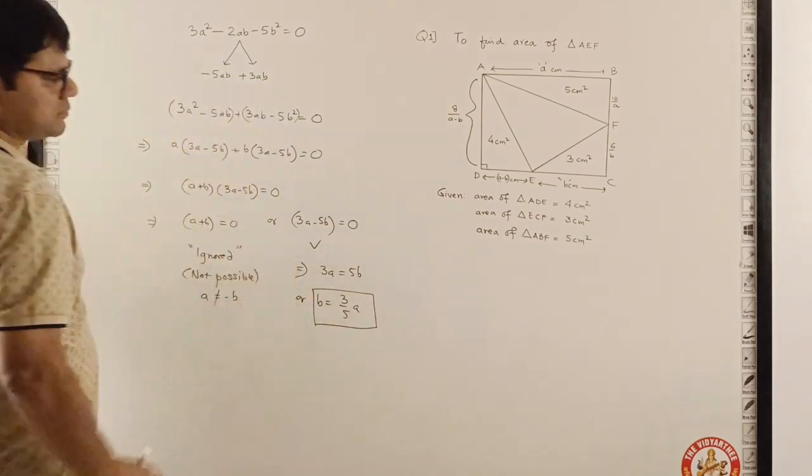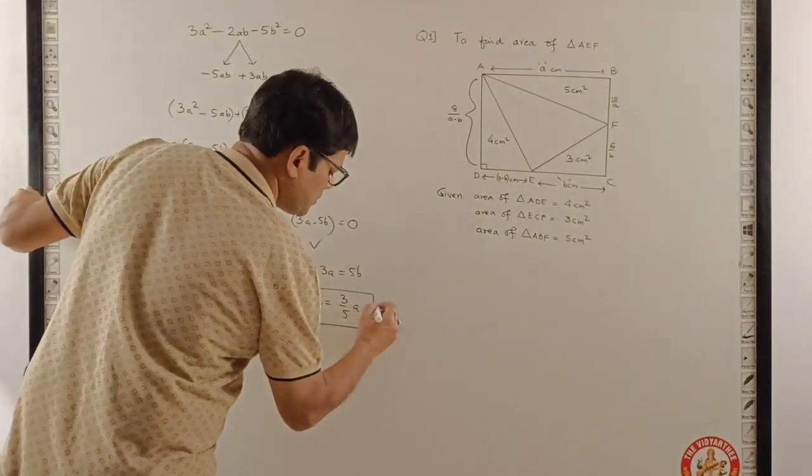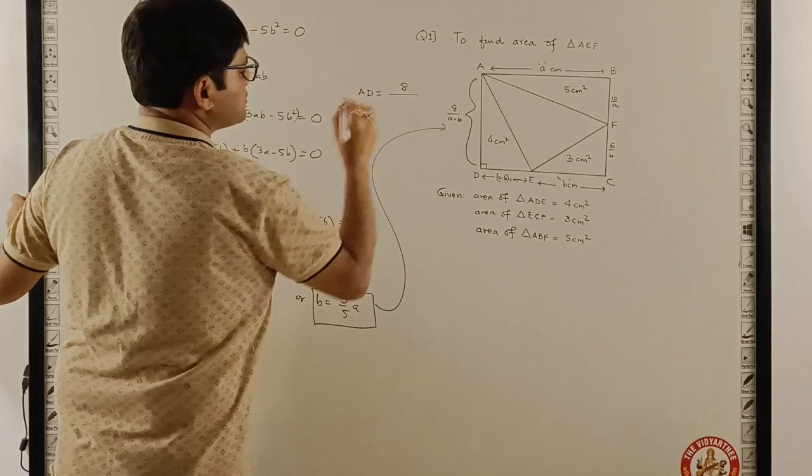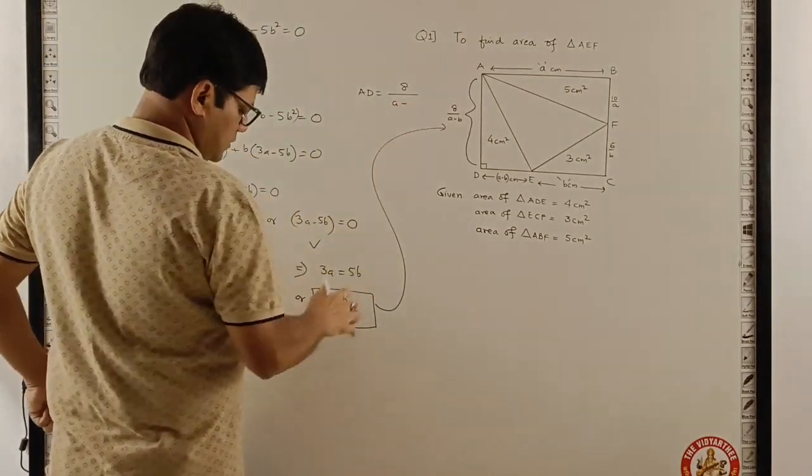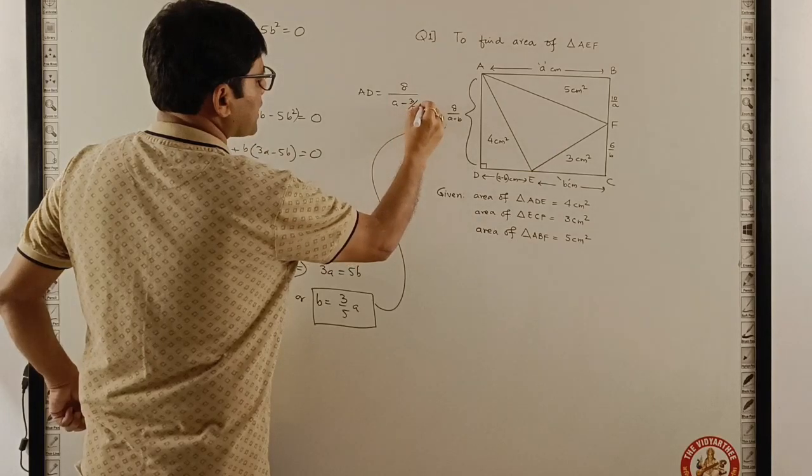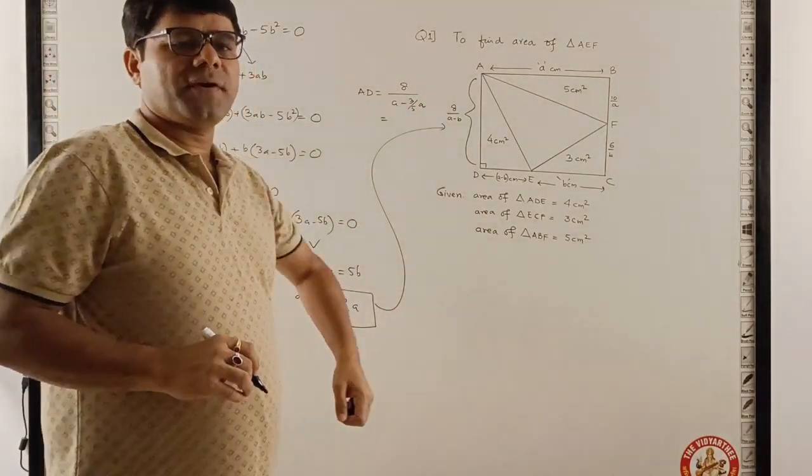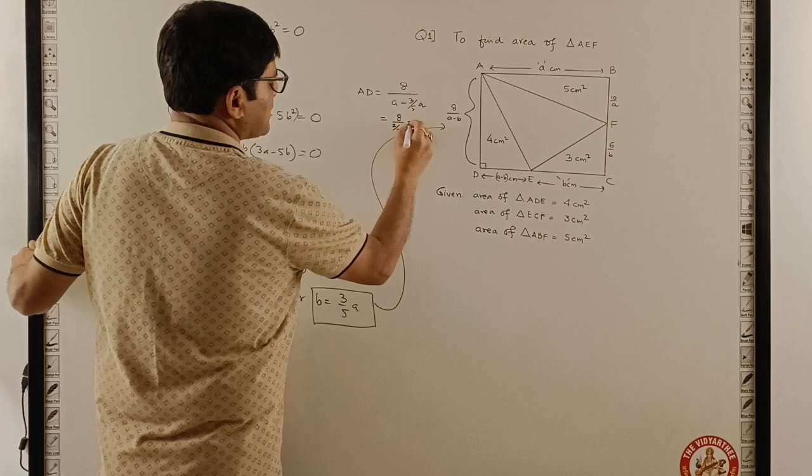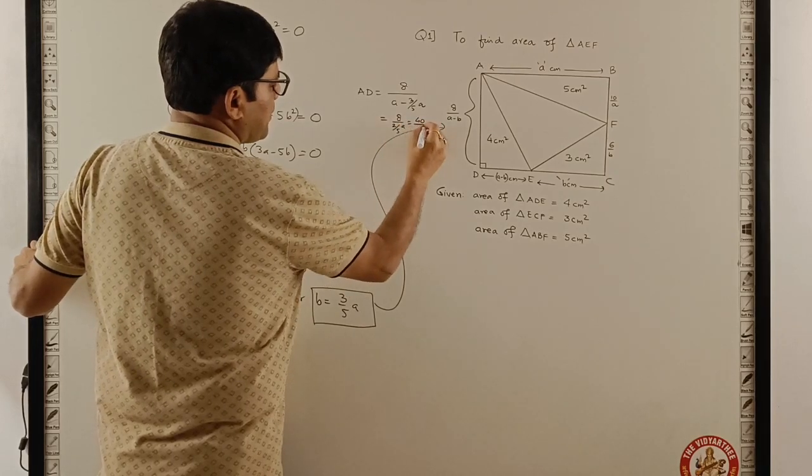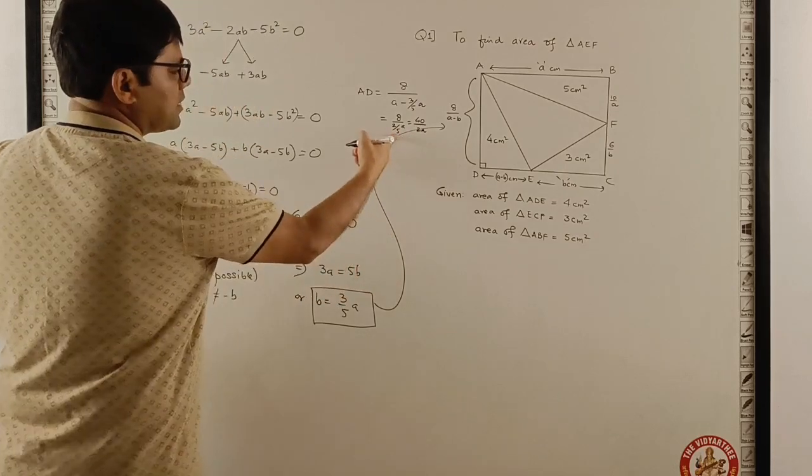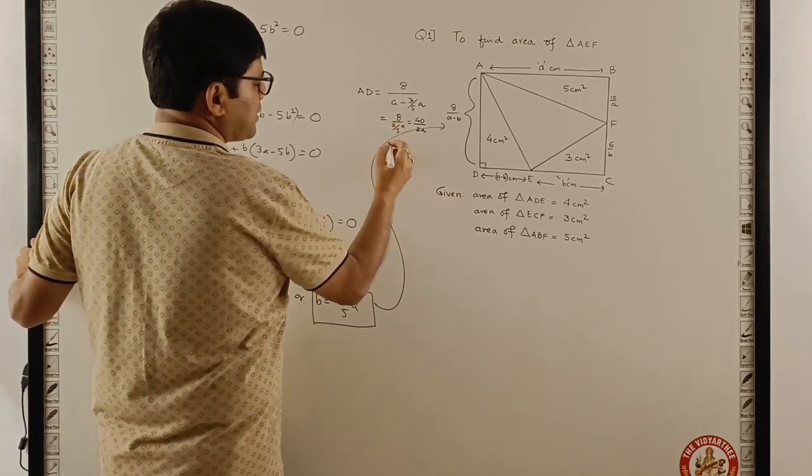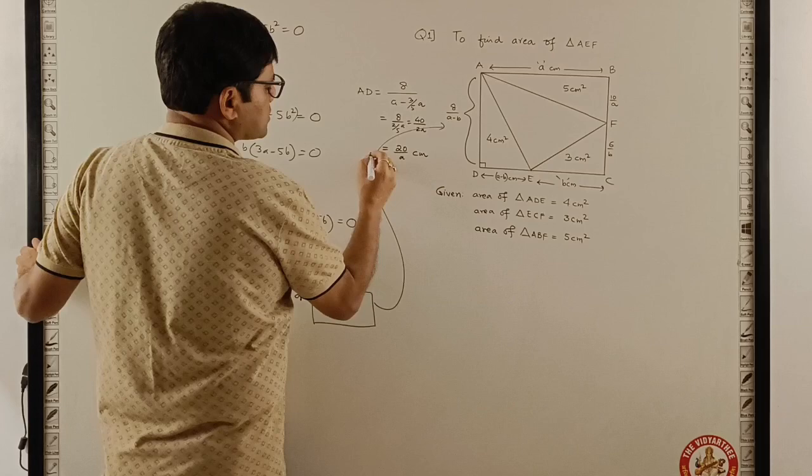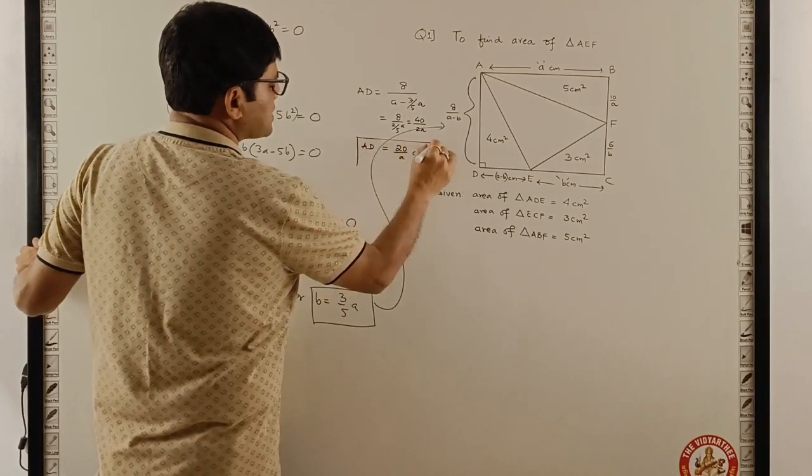This implies 3A equals 5B or B equals 3 by 5 times A. Now we will use this result and extrapolate this. AD equals 8 upon A minus B, which is A minus 3 by 5 of A. So A minus 3 by 5 of A is 2 by 5 of A. So 8 divided by 2 by 5 of A which means 40 by 2A. This equals 20 by A centimeter. So I finally got the value of AD in terms of A.